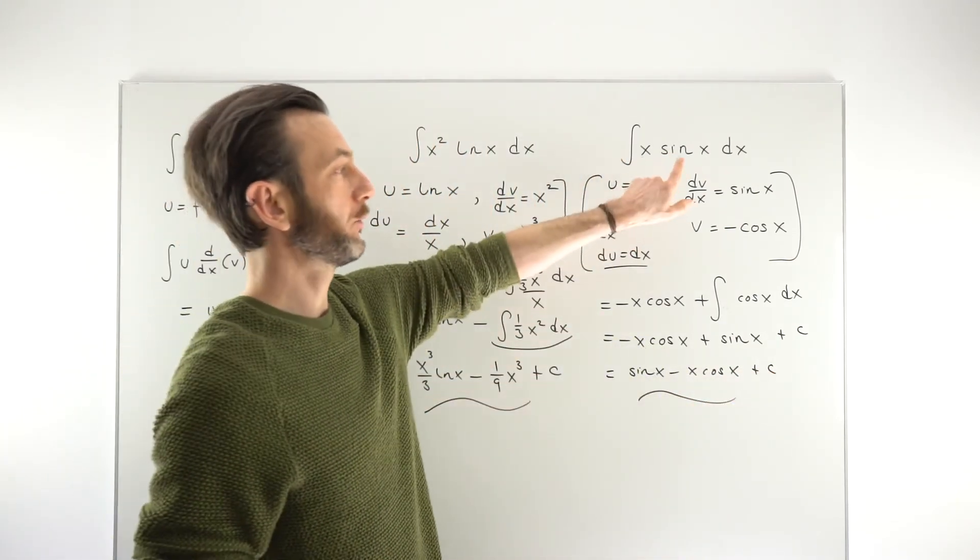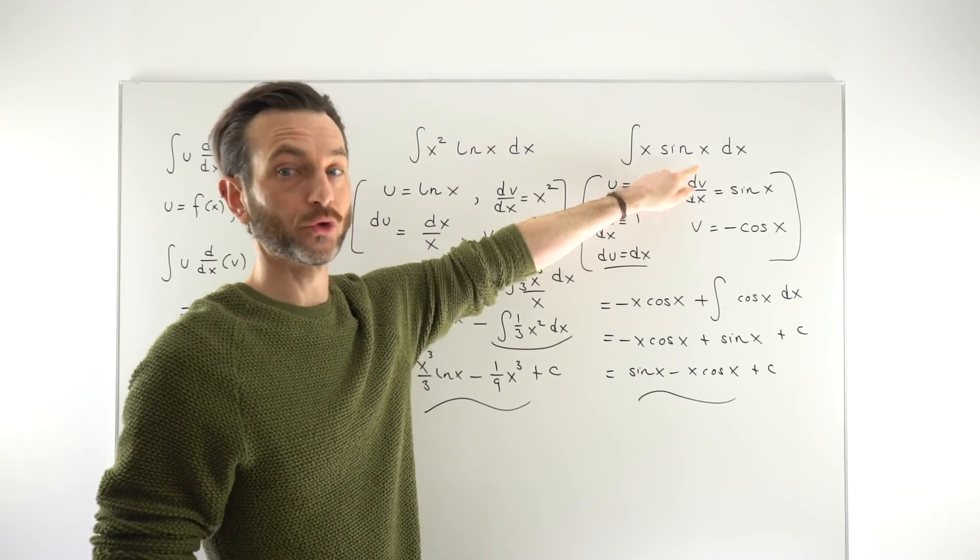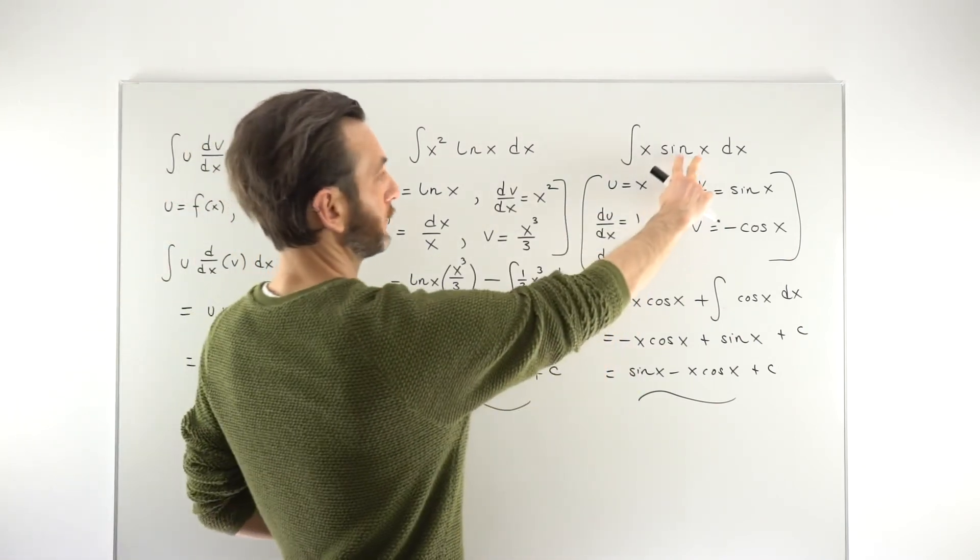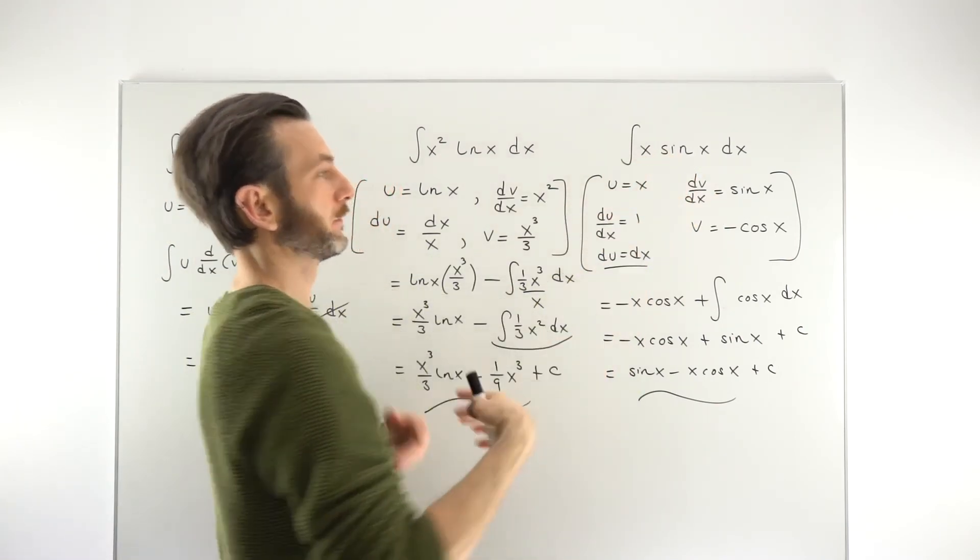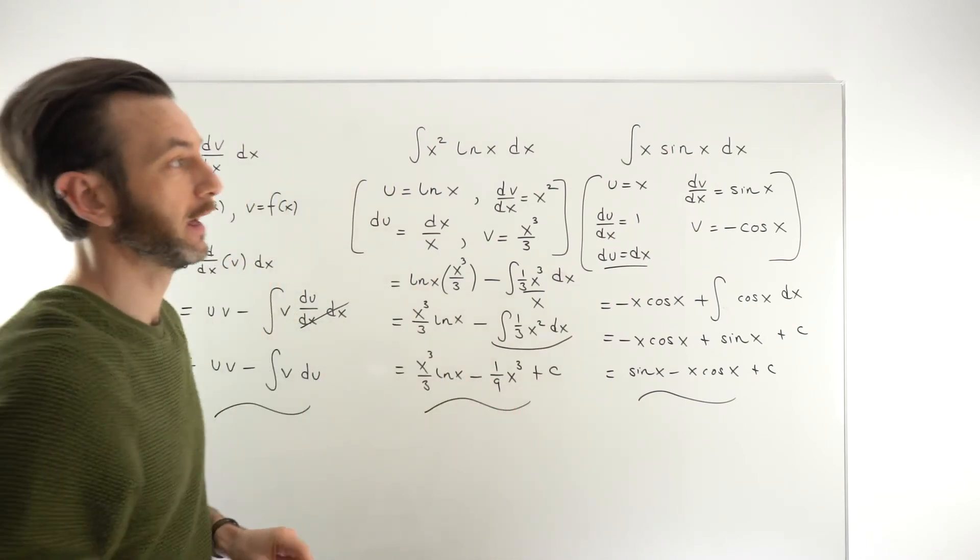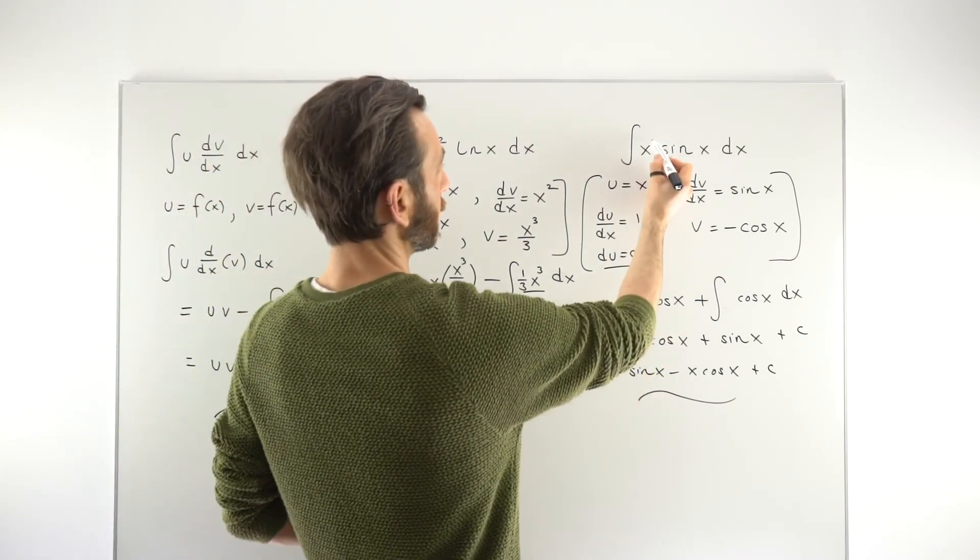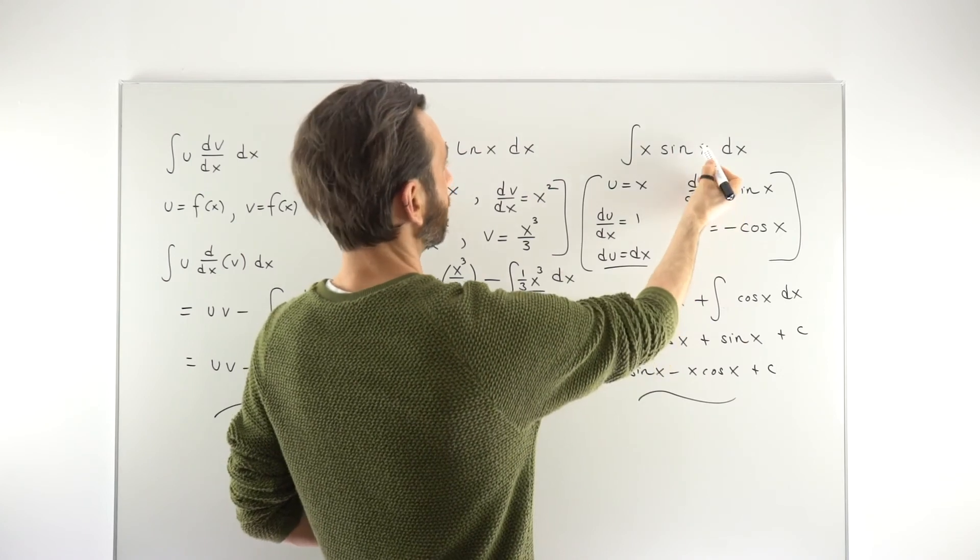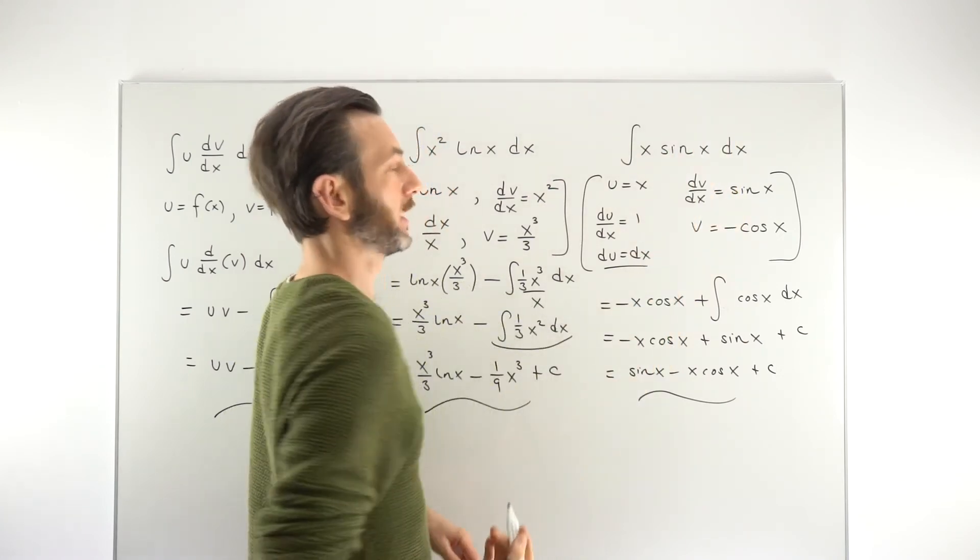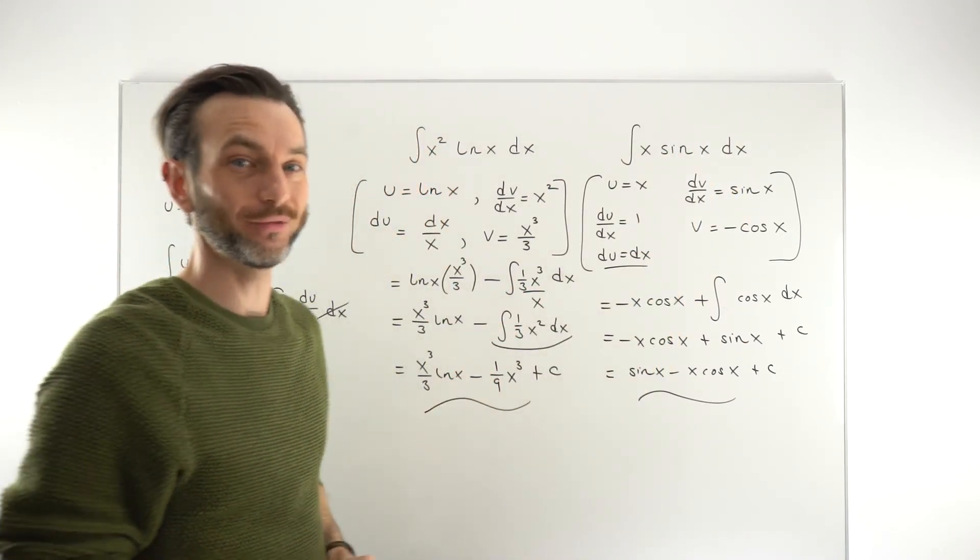So we get sine x minus x cos x plus c. So quite a nice example, fairly standard example that if you just start an integration by parts, like a trig function and some kind of x or an x squared or something like that. But I would warn that even moving this up to an x squared or making this some variation of sine, just a tiny change can make it significantly more difficult.